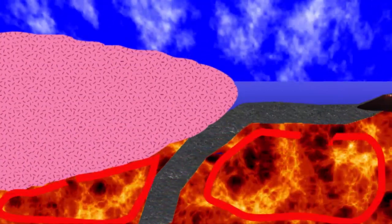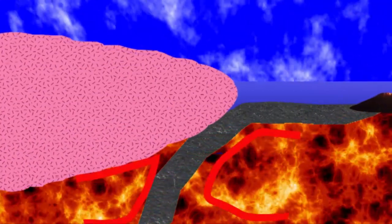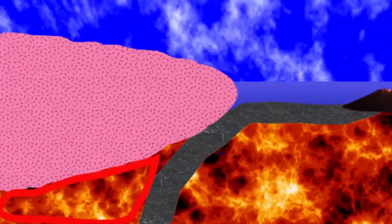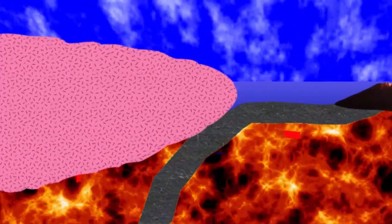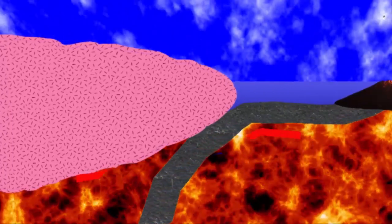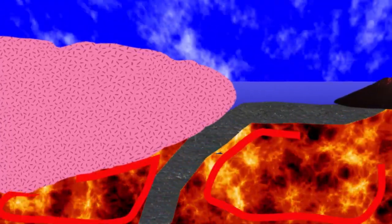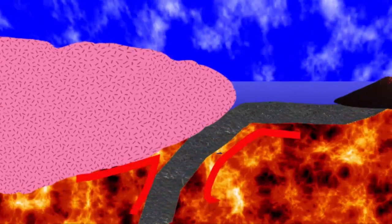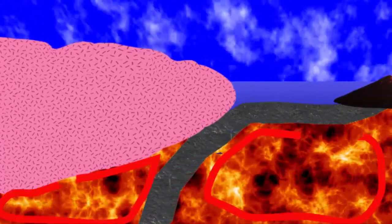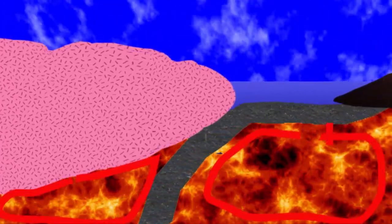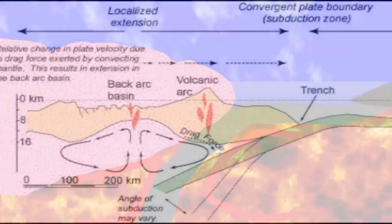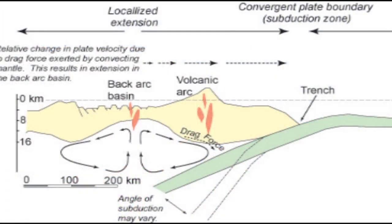This causes stresses on the lithosphere above. It is common to see extension pulling apart in what is known as the back arc basin of the overriding plate. For a continent, the land approaching the plate boundary is getting a mini conveyor belt pull back towards the trench, and this is called trench suction.